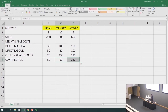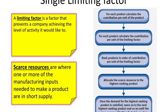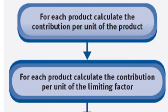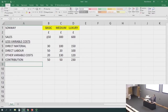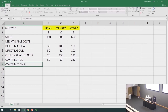Step one — going back to the slides — for each product, calculate the contribution per unit of the product. Step two: calculate the contribution per unit of the limiting factor. So now contribution per unit divided by the amount of the limiting factor. In this case, the first limiting factor is sales. If sales is the limiting factor, contribution per unit divided by sales — because sales is my scarce resource, I cannot sell as much as I would like to.